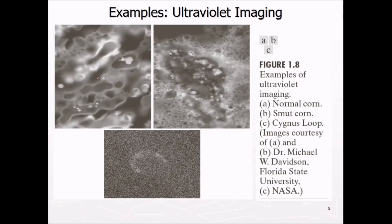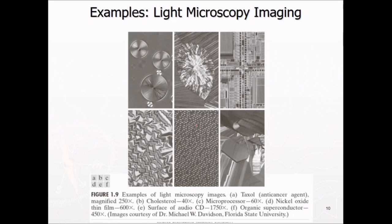Then comes ultraviolet imaging. These are normal cone, smut cone, cygnus cone. Then light microscopy imaging. These are the examples of light microscopy images. This is taxon that is anti-cancer agent. This has been magnified actually. These are cholesterols, microprocessor, nickel oxide thin film. These are surface of audio CD and this is the organic superconductor.